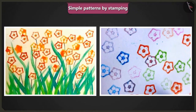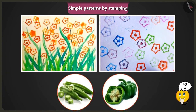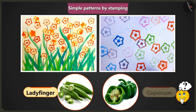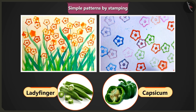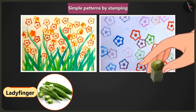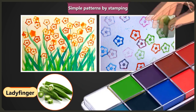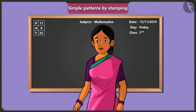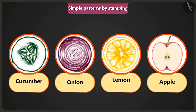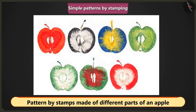Here in these pictures, which vegetable was cut and dipped in colour to get this pattern by stamping — lady's finger or capsicum? Ma'am, in these pictures a pattern of lady's finger was stamped by cutting and dipping it in different colours. Awesome, very good, Jimmy. We can make simple patterns by using other vegetables and fruits as well — all we need to do is cut them and dip them in colour or apply colour on them. See how pieces of apple are used here as stamps to create a pattern by repeating the design.